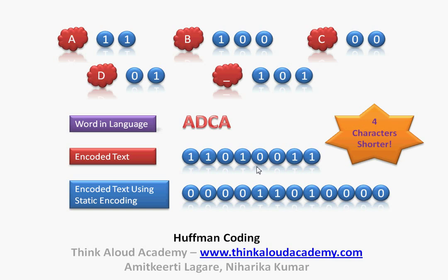Huffman coding gives you a shorter string and a better encoding mechanism. The key difference between static encoding and Huffman encoding is that in static encoding each character has a fixed-length code, whereas in Huffman coding some characters will have shorter codes and some will have longer codes. The shorter codes are for characters which occur very frequently in your text, and longer codes are for characters which occur less frequently. By using Huffman encoding, you can compress your data.